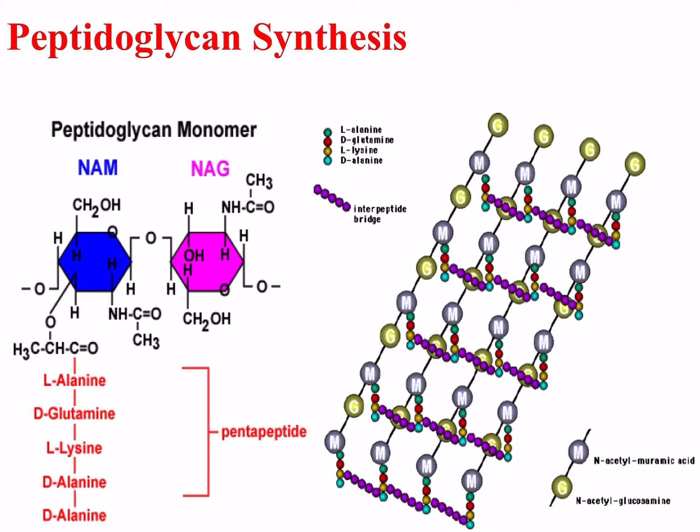The second major target for antibacterials is peptidoglycan cell wall synthesis. This is a unique target in bacterial cells. It consists of several layers of alternating units of the monomers N-acetylmuramic acid and N-acetylglucosamine, shown on the left. Each of these layers is connected via an interpeptide bridge between the NAM units on each layer, as shown in the diagram on the right.